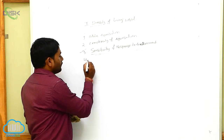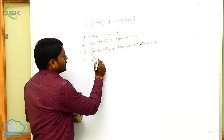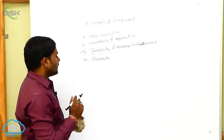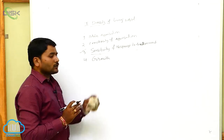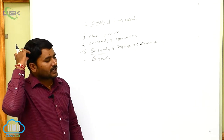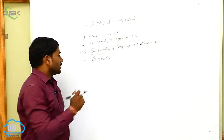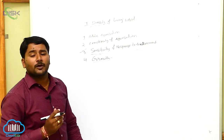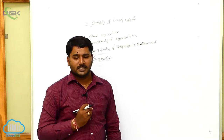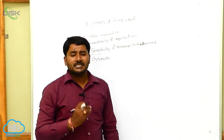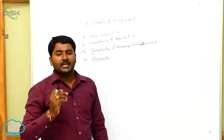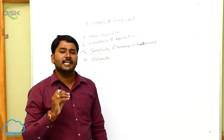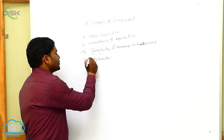Next, the fourth character of the living world or living organisms is growth. Growth is a fundamental property of living organisms. Generally, increase in mass or size and increase in number is considered as growth.